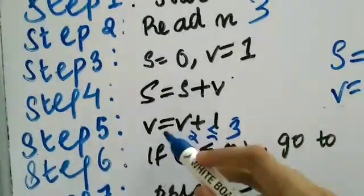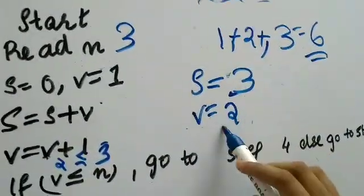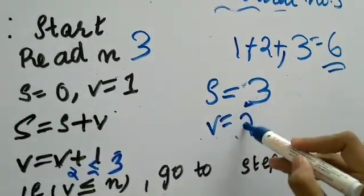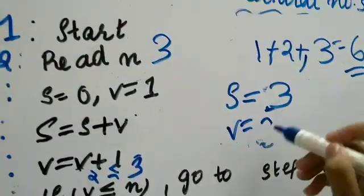Now we are asked, next step, we have to add 1 to the current v. What is the current v? Current v is 1. On adding 1 to it, it becomes 3. 2 plus 1, 3. Now let's see if,